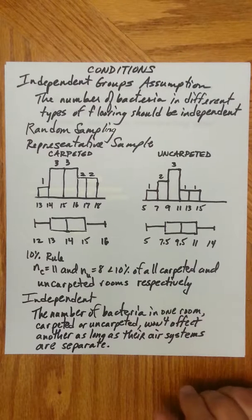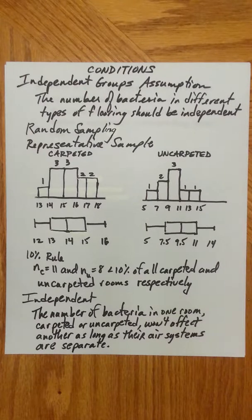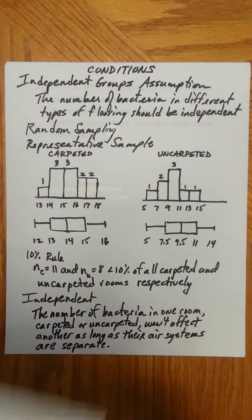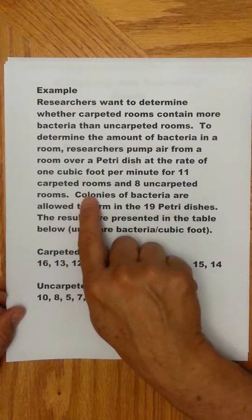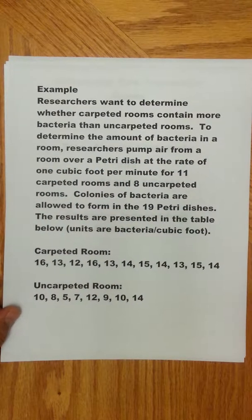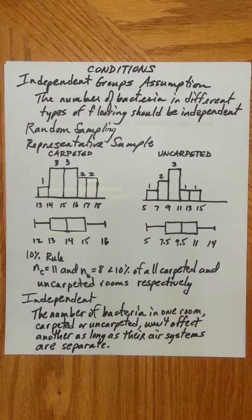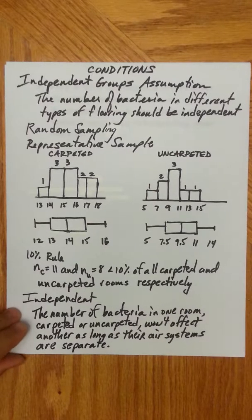For independence, the number of bacteria in one room — carpeted or uncarpeted — won't affect the number of bacteria in another room, as long as the air systems are separate. They pumped air from a room over a petri dish, so as long as the air conditioning systems are separate, one room should not affect the other. With randomization, that should be done well — so we've met conditions.